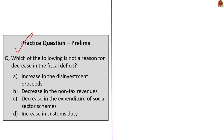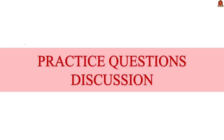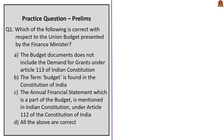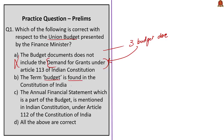Moving on to the last session for the day — practice questions discussion. The first question is about the Union budget: 'Which of the following is correct with respect to the Union budget presented by the Finance Minister?' The first option says the budget document does not include the Demand for Grants under Article 113 of the Indian Constitution — but in our analysis, we saw that Demand for Grants is one of the three budget documents based on the Indian Constitution, so this statement is wrong. The second statement says the term 'budget' is found in the Constitution of India — this is also wrong, as the term 'budget' is not mentioned in the Constitution.